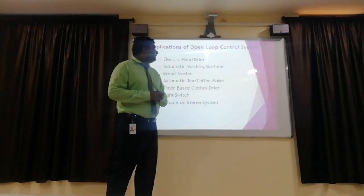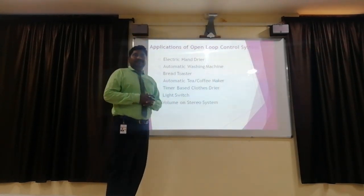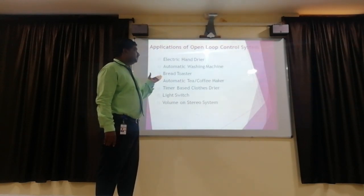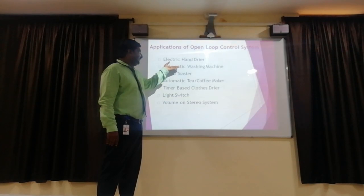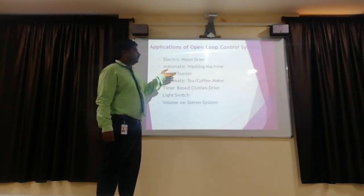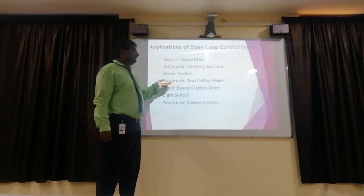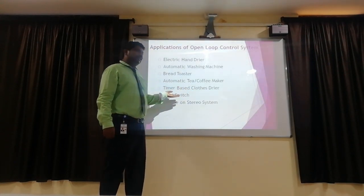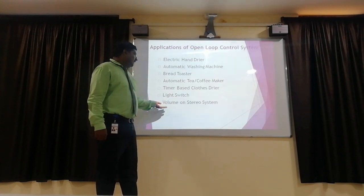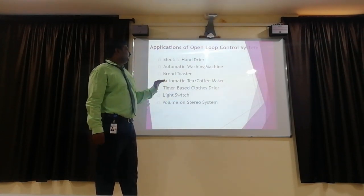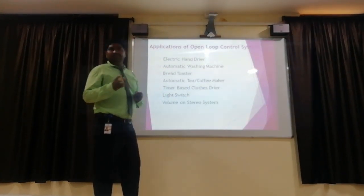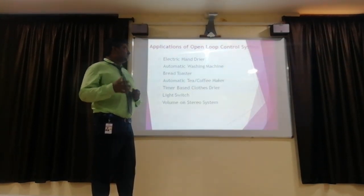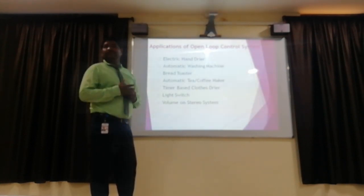Applications of the open loop control system: electric hand dryer, automatic washing machine, bread toaster, automatic tea or coffee maker, timer-based cloth dryers, light switches, and volume control on a stereo system. These are the applications of the open loop control system.